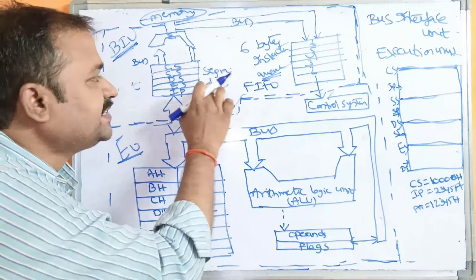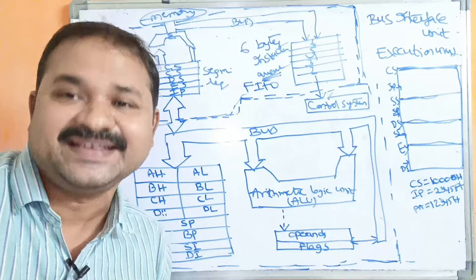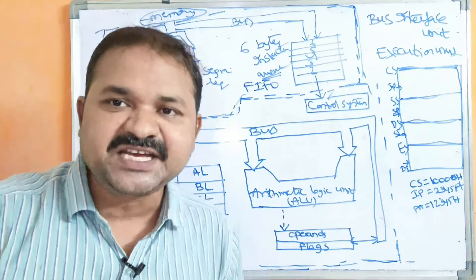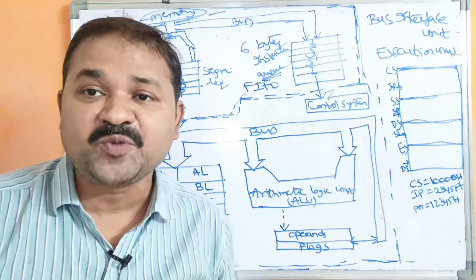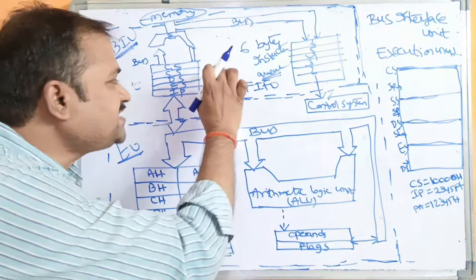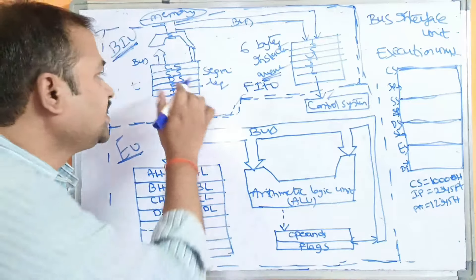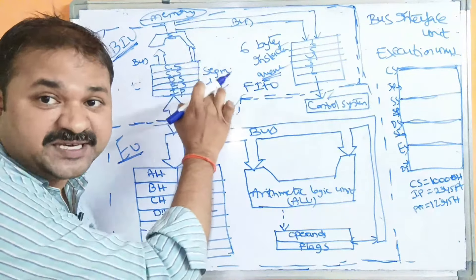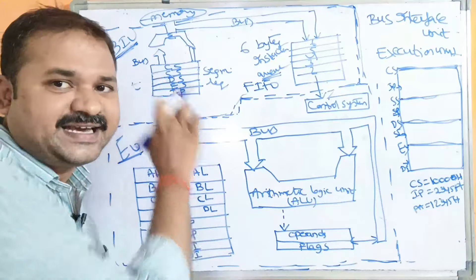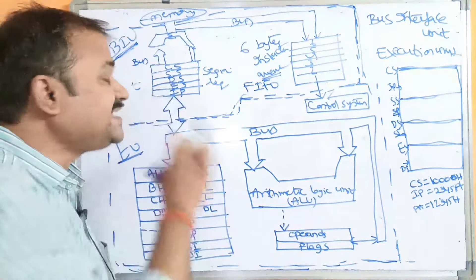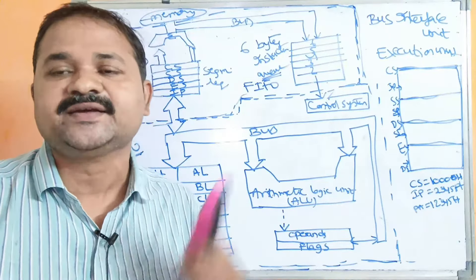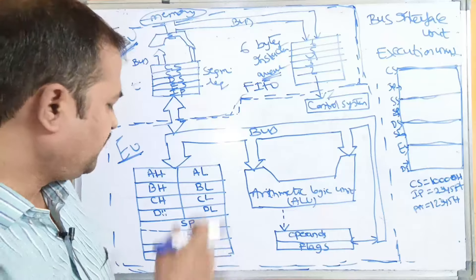The first register is CS — Code Segment register. All register sizes are 16 bits because the 8086 is a 16-bit microprocessor. CS contains the starting address of the Code Segment. SS — Stack Segment register — contains the starting address of the Stack Segment. DS — Data Segment register — contains the starting address of the Data Segment. ES — Extra Segment register — contains the starting address of the Extra Segment. IP — Instruction Pointer — specifies the offset.